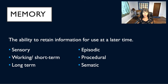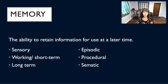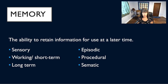The last type of memory we're going to look at today is semantic memory. Semantic memory refers to one particular portion of long-term memory that processes ideas and concepts not drawn from personal experience — so not the same as episodic. It includes things that are common knowledge, like the names of colors, the sounds of letters, capitals of countries, and other basic facts acquired over time. It's our facts-and-figures memory, and it's quite important for students.